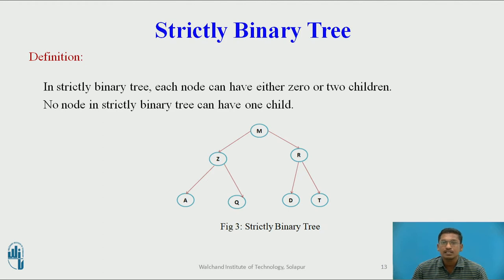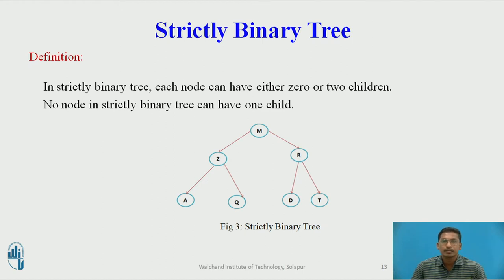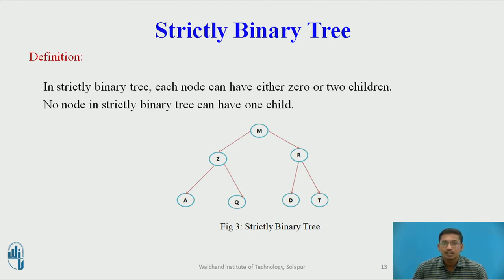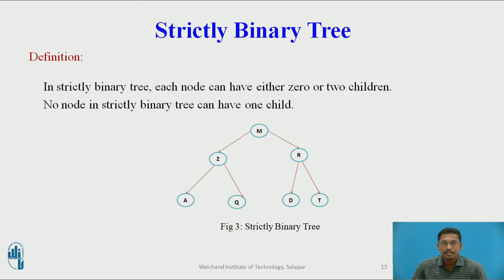Next definition is strictly binary tree. In a strictly binary tree, each node can have either zero or two children — in other words, no node can have exactly one child. This is an example of a strictly binary tree where each node can have a maximum of two children, and leaf nodes have no children.